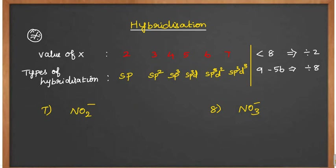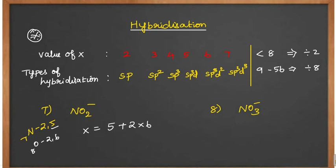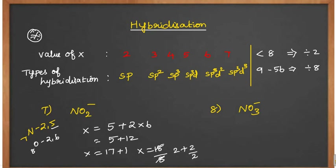First: NO₂⁻. Nitrogen has atomic number 7, so 2, 5. Oxygen is 2, 6. So: 1 into 5, plus 2 into 6 = 5 plus 12 = 17. Since there is a minus charge, we add 1, so x value is 18. Divide by 8: 2×8 is 16, remainder 2. Divide remainder 2 by 2 to get 1. So x value is 2+1 = 3, which means sp2 hybridization.